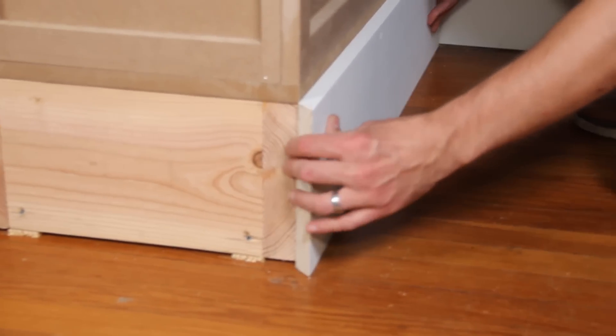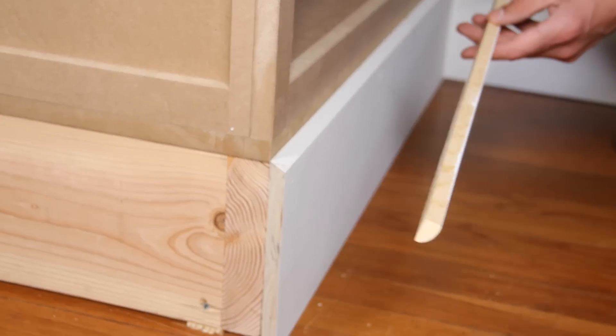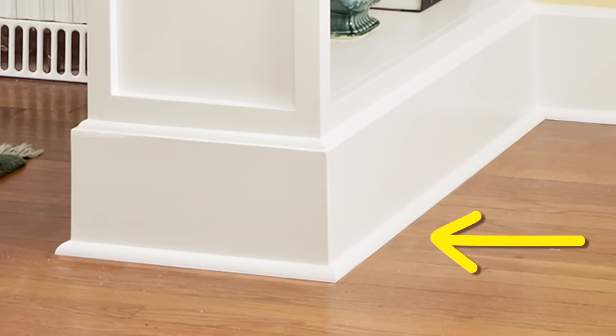Glue and nail the 1x8 baseboard in place. Then add the baseboard cap. And finally add shoe molding to cover any gaps along the floor.